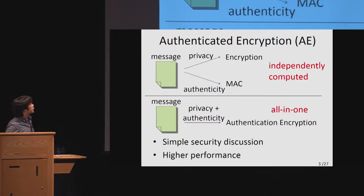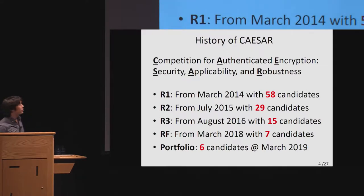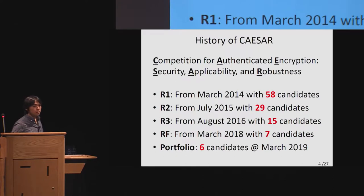This slide shows fundamental knowledge about authenticated encryption. Privacy and authenticity are two basic notions required for secure communication. Previously, encryption and MAC were independently computed to provide both. Authenticated encryption is an all-in-one approach. This simplifies the security discussion and implementation issues. Moreover, we can enjoy higher performance by sharing the computation of MAC and encryption. From 2014, the community had a competition to select a portfolio of authenticated encryption called CAESAR. The competition started from 2014 with 58 candidates.